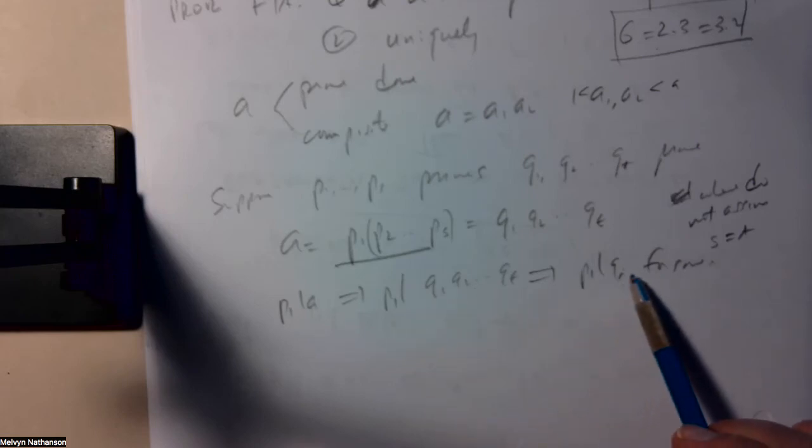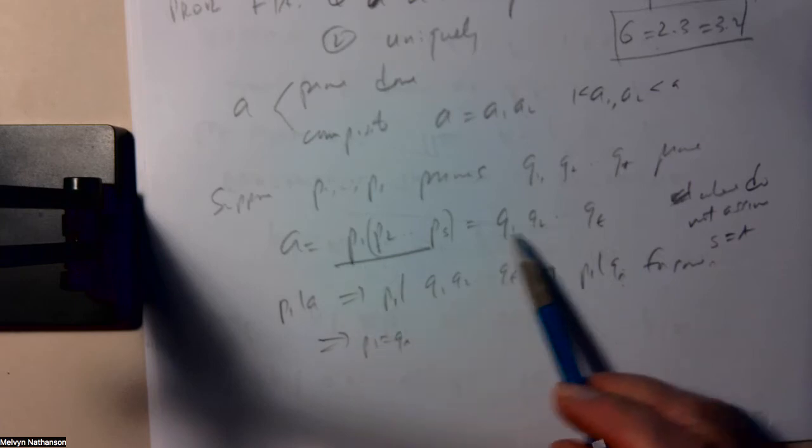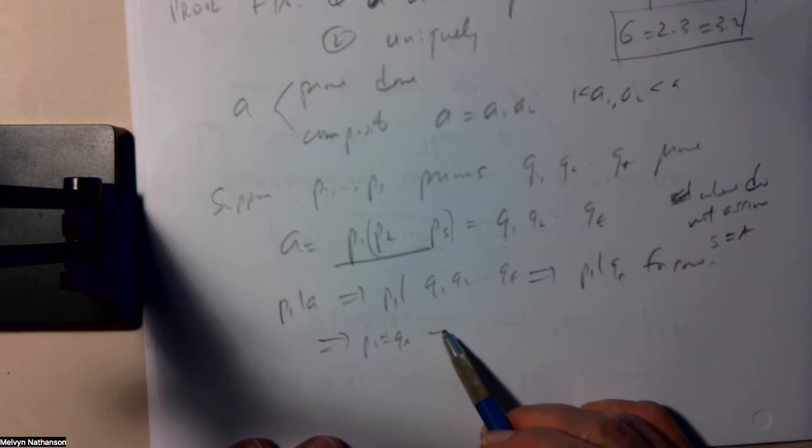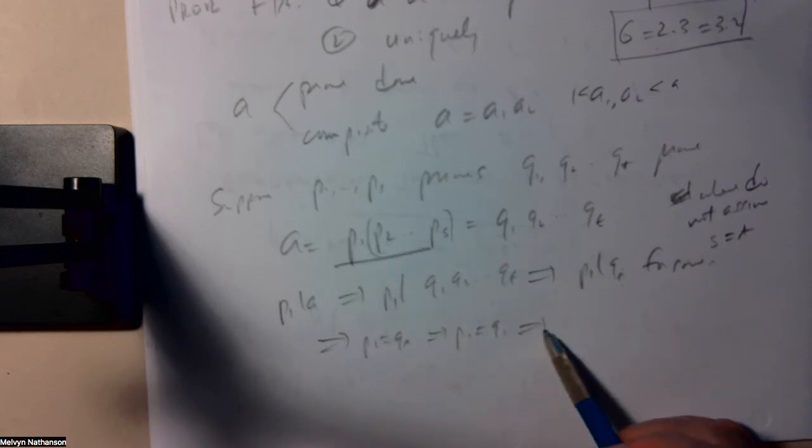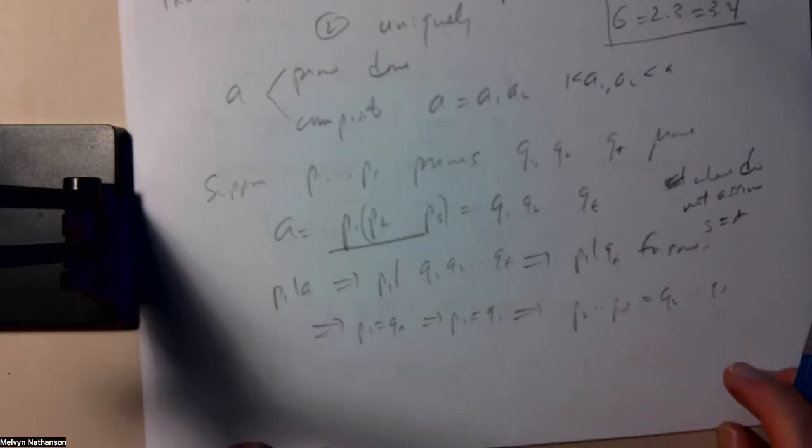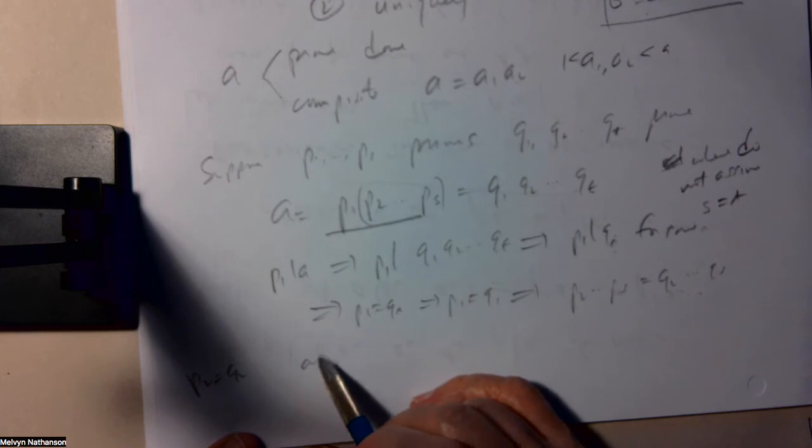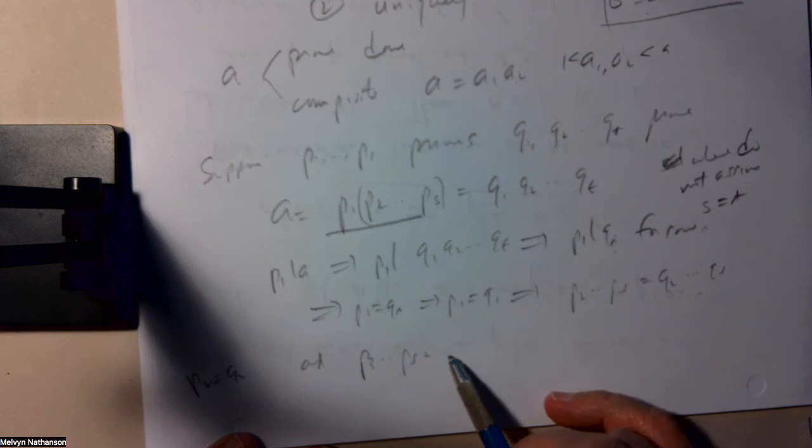So p1 divides some q_i. But q_i is a prime. Its only divisors are one and itself. p is a prime, so it's not one. So p1 equals q_i. So in fact, the prime p1 is one of these factors over here. If I renumber them, I can suppose that p1 is q1. So then I can factor p1, and I get that p2 up to p_s is q2 up to q_t. And then we continue this argument. p2 divides this product, so it's one of the factors. Say it's q2. And continuing in this way, p3 is one of these factors, and so forth. We get, in the end, the same number of primes and, in fact, the same primes.